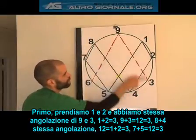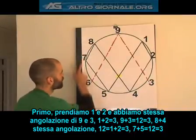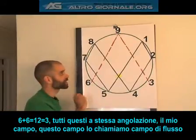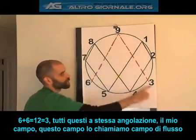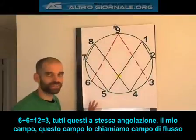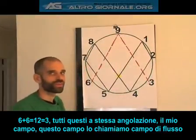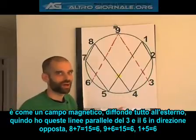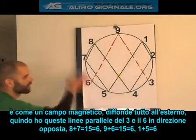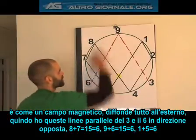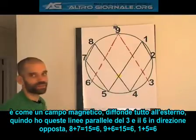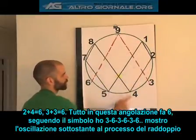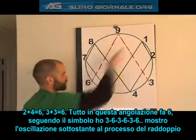8 plus 4, which is at the same parallel angle, is 12, which is 3. 7 plus 5 is 12, which is 3. 6 plus 6 is 12, which is 3 — all of those at the angle of my 3, which is my field. This field is separating out — we call it a flux field, closest to a magnetic field — it is spreading everything out. So I have 3 going this way in parallel lines, and 6 going the other way. 8 plus 7 is 15 which is 6; 9 plus 6 is 15 which is 6; 1 plus 5 is 6; 2 plus 4 is 6; 3 plus 3 is 6. Everything moving at this angle is 6.